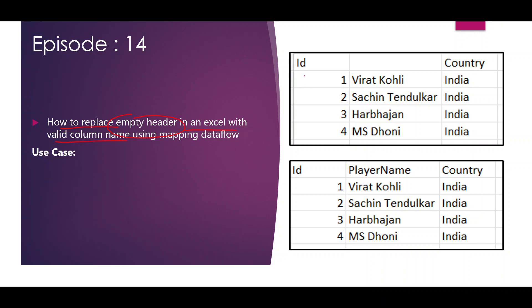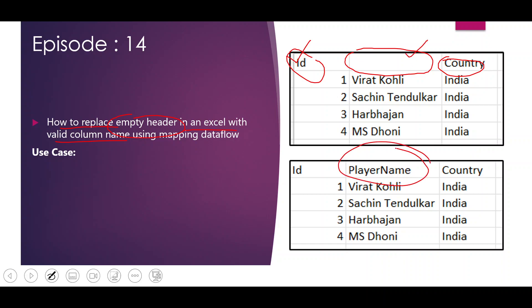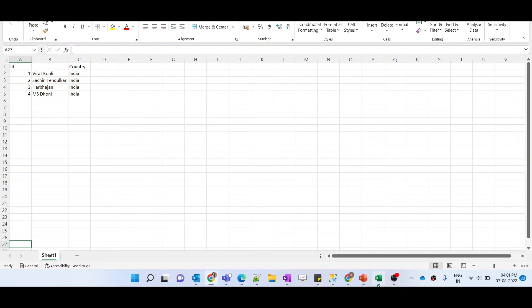We have to replace an empty header present in an Excel sheet with a valid column name. As shown in the first diagram, this is how our source data looks: there are three columns — the first one is ID, the second one is empty, and the third one is Country. We need to replace this empty header with a valid column name.